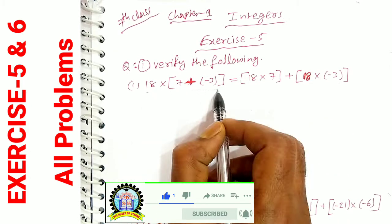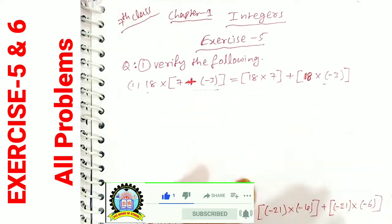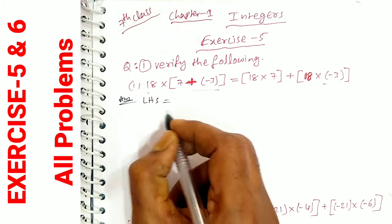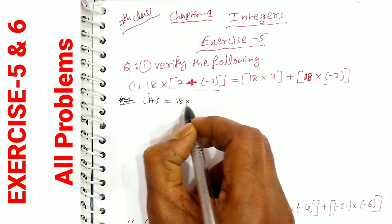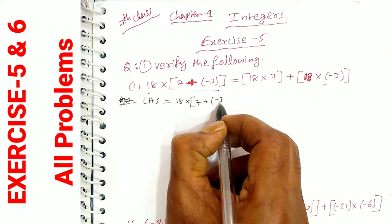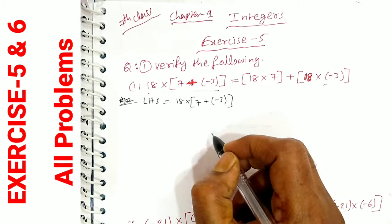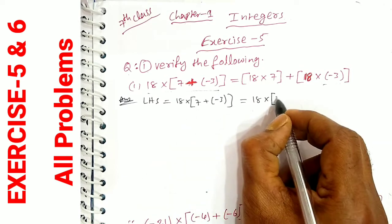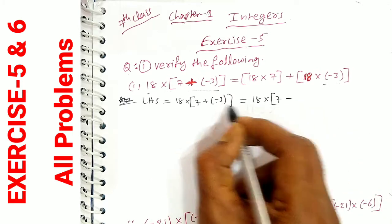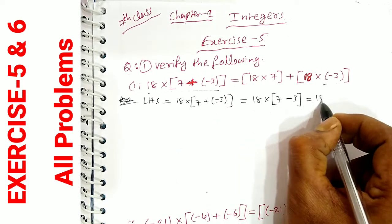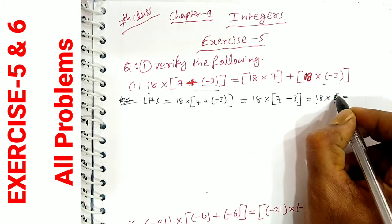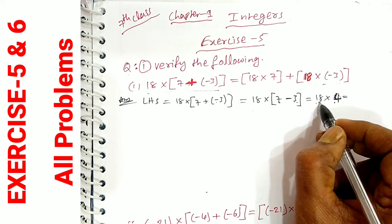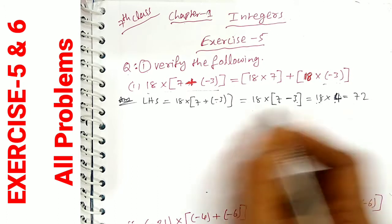Here we have LHS and RHS, and we need to show they have the same answer. Simplification is here. So we calculate LHS first. LHS: we have 18 into 7 plus minus 3. First, solving the bracket: 7 plus minus 3 equals 7 minus 3, which is 4. So 18 into 4. Using the 18 times table, 18 into 4 equals 72. This is LHS.